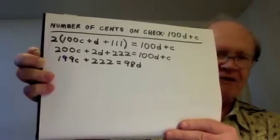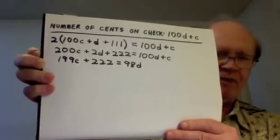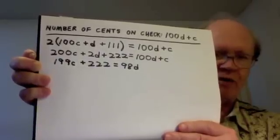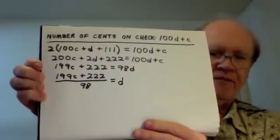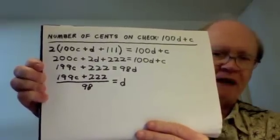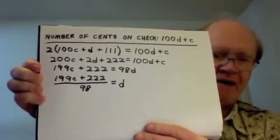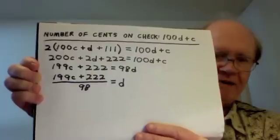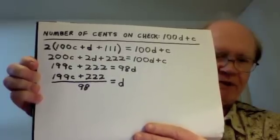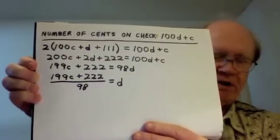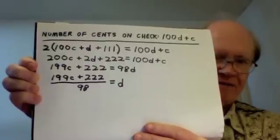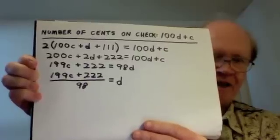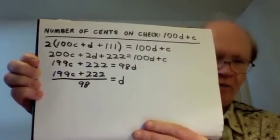C has to be a number from the set 2, 4, 6, 8, 10, 12, and so on. If I divide both sides of that equation by 98, I get D equals this fraction: 199C plus 222 divided by 98. And that fraction, since it equals D, has to come out to be a whole number.